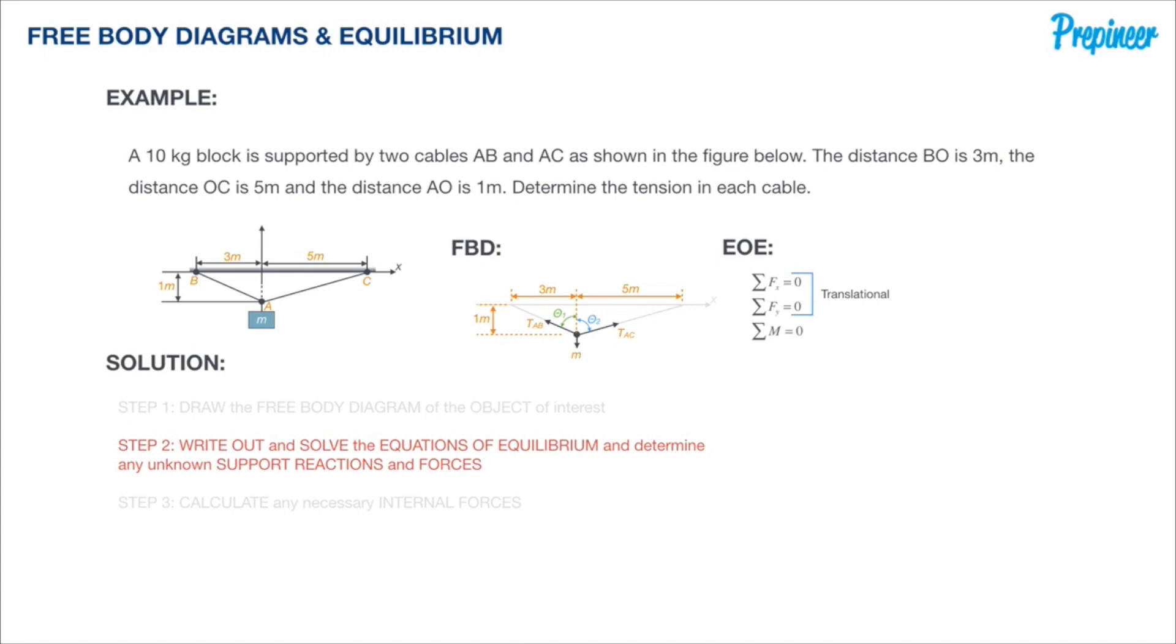The first two equations confirm and verify that we have translational equilibrium—the object is not moving left, right, up, or down. It's in equilibrium. While our third equation is our rotational equilibrium. If it sums to zero, there is no rotation of that object. All combined, all three of those summing to zero, our object is in complete static equilibrium.